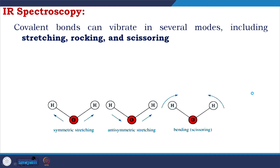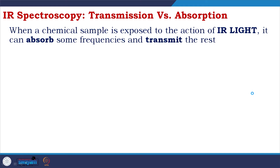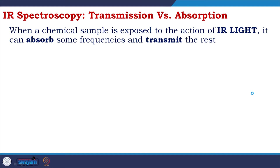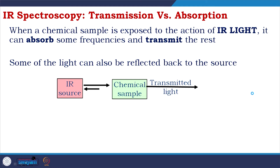The most useful bands in an infrared spectrum correspond to the stretching frequencies — symmetric and asymmetric stretching. Regarding transmission versus absorption: when a chemical sample is exposed to infrared light, it can absorb some frequencies and transmit the rest, with some light also reflected back to the source.